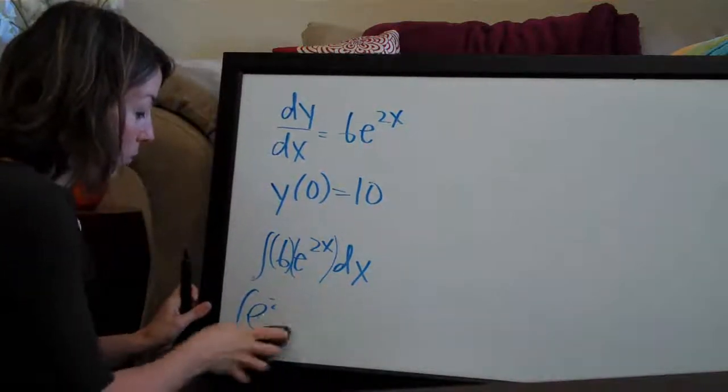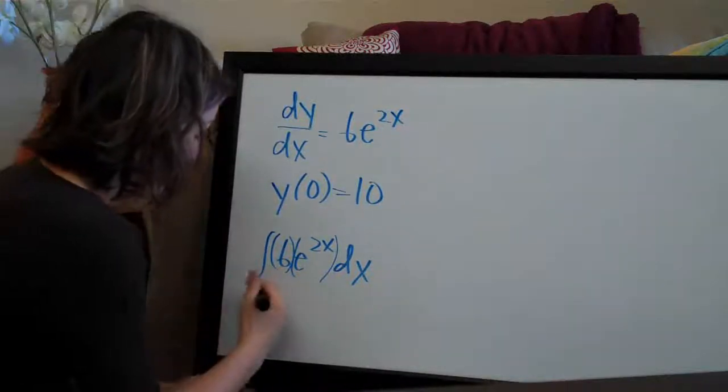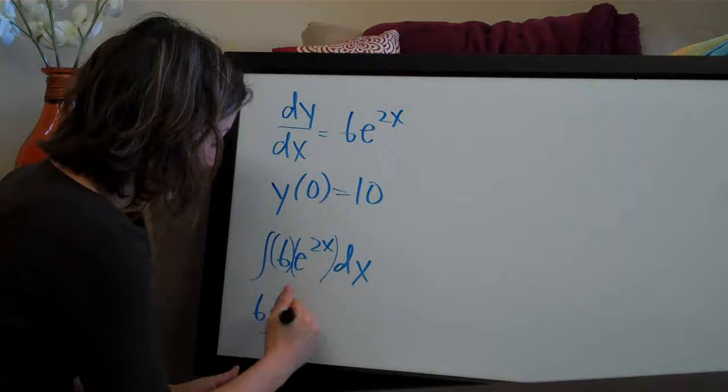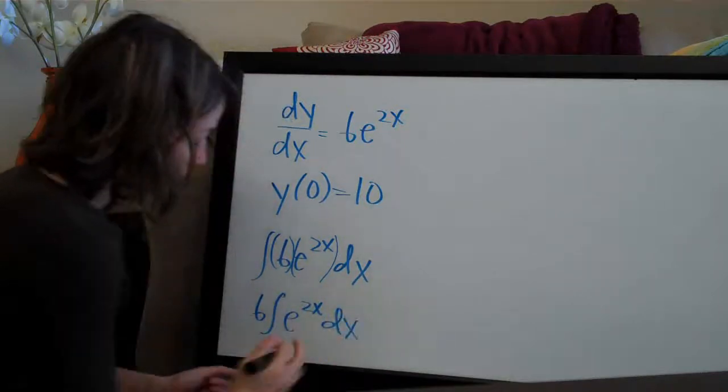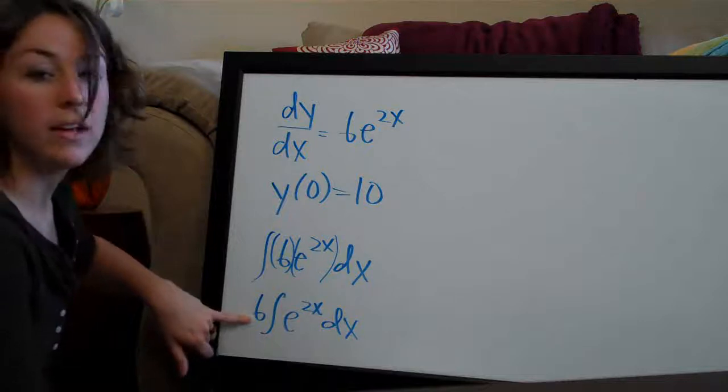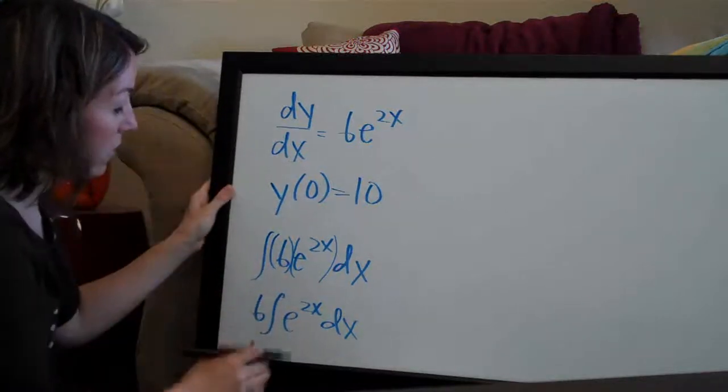So this will look like 6 times the integral of e^(2x) dx. Now we don't have to deal with the 6, all we have to do is take the integral of e^(2x). So let's go ahead and do that.